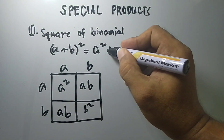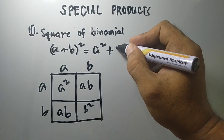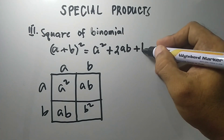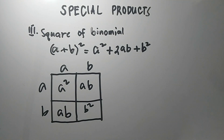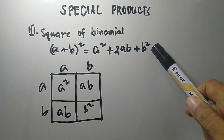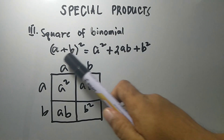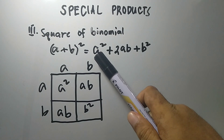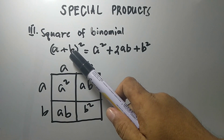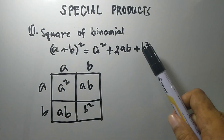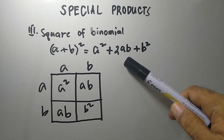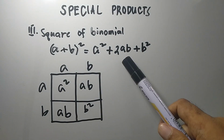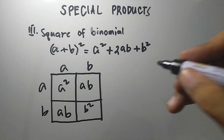So our answer for the area of the big tile is a squared plus two ab plus b squared. Now we can make a rule out of this: to find the product of the square of a binomial, we take the square of the first and last terms — a squared and b squared — and for the middle term we get the product of the first and second terms, multiplied by two, giving us two ab.